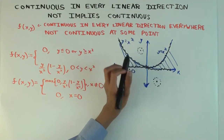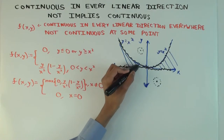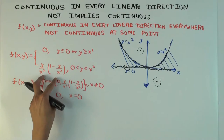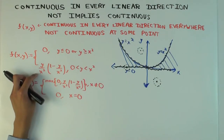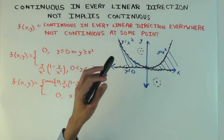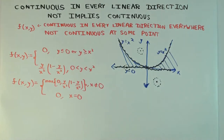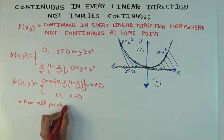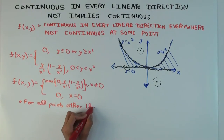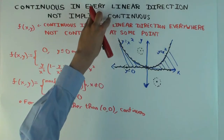Now, why doesn't the origin work? At the origin, this definition doesn't make sense — the origin is a corner point between so many different definitions, and it's not clear what the limit of this piece is. You cannot directly plug in the expression at the origin because you get a 0 over 0 form. For all points other than the origin, the function is continuous, and since it's continuous there, it's also continuous in every straight line direction, because the other direction of that implication works. So it's continuous in every linear direction at those points.